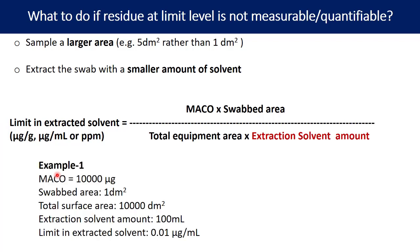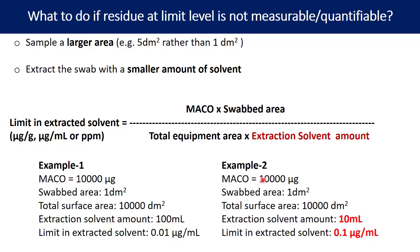For example, with MACO = 10,000 micrograms, swab area = 1 decimeter square, total surface area = 10,000 decimeter square, and extraction solvent = 100 ml, the limit is 0.01 micrograms/ml. Reducing the extraction solvent to 10 ml raises the limit to 0.1 micrograms/ml — and you may get an appropriate response at that concentration, resolving the challenge where the residue at limit level was not measurable.